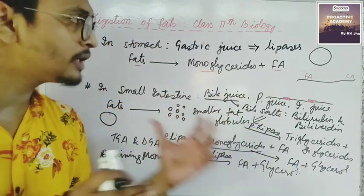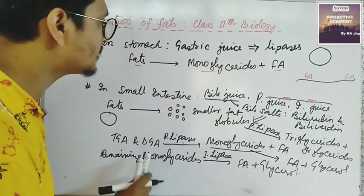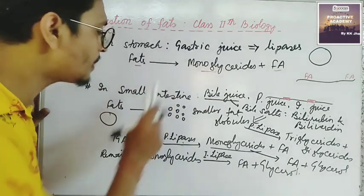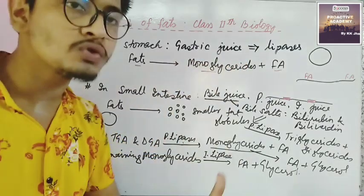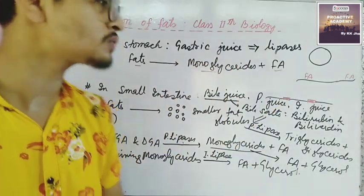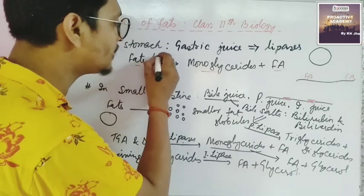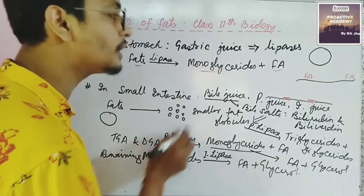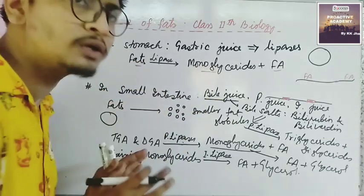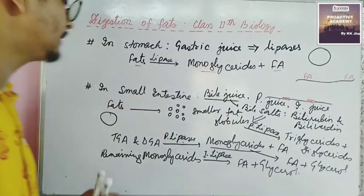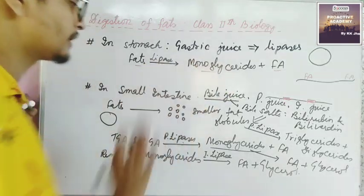Let us recap once more. Fat digestion occurs in two portions — stomach and small intestine. In the stomach, gastric juice contains a small amount of lipases. This gastric lipase acts on fats and breaks them down into monoglycerides and fatty acids. But 100% of the fat is not digested here — only about 20-30% or even less is digested in the stomach.